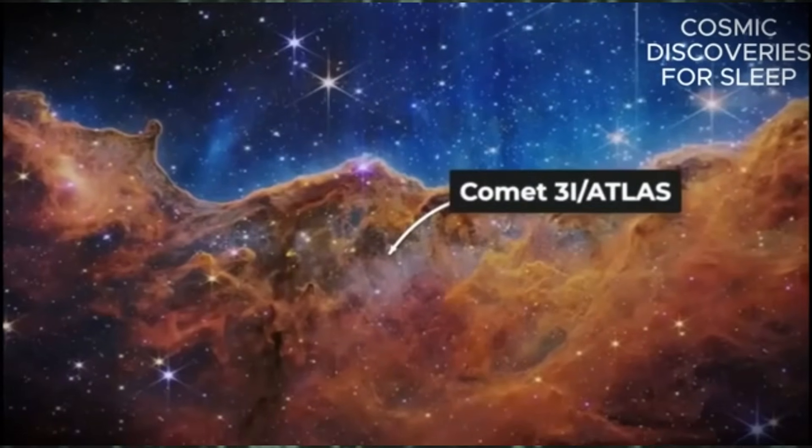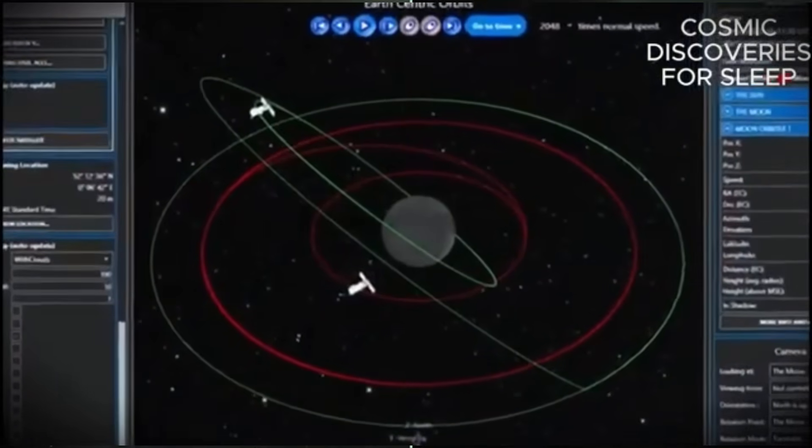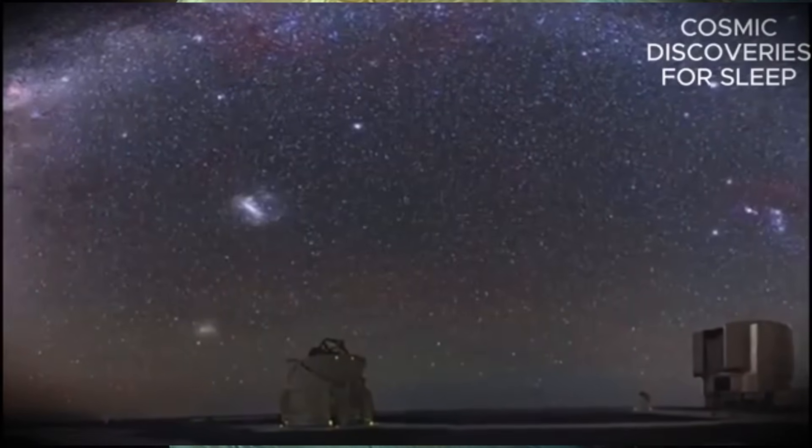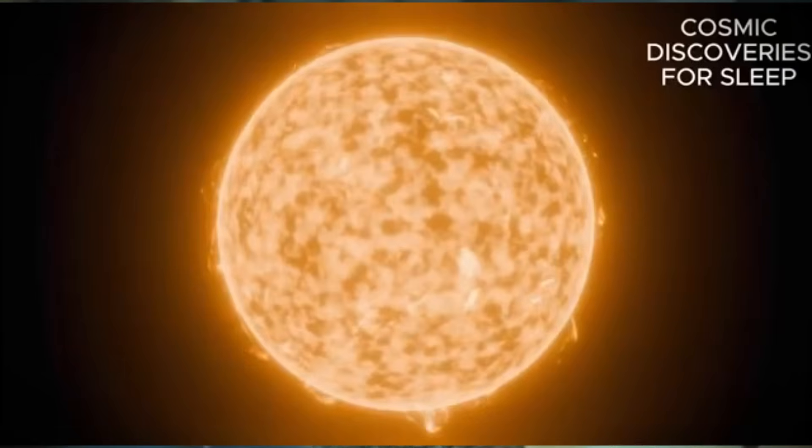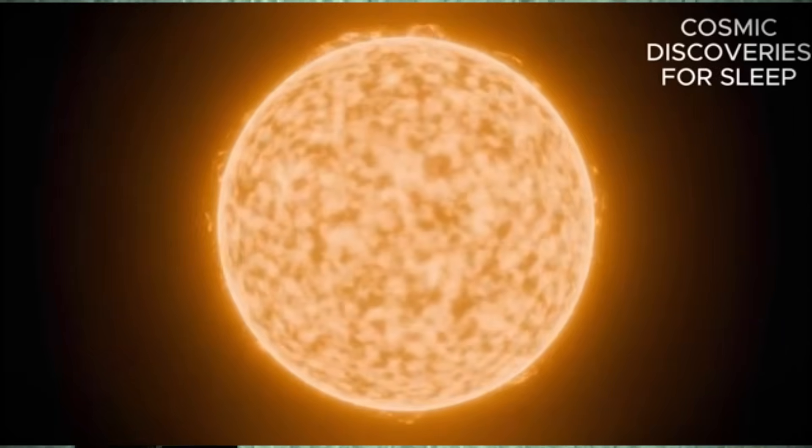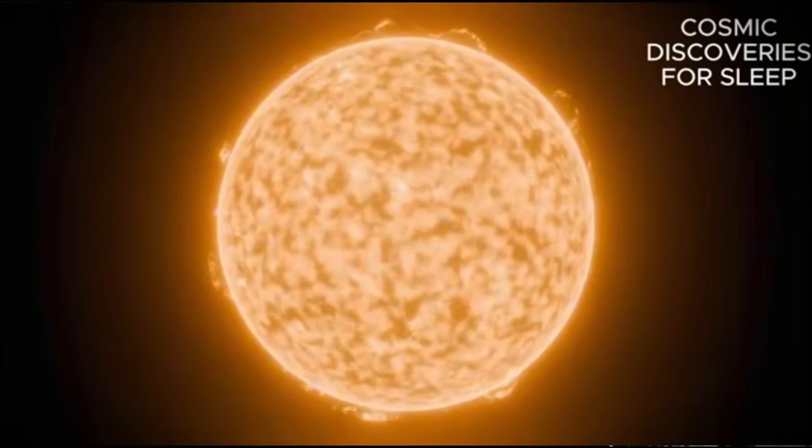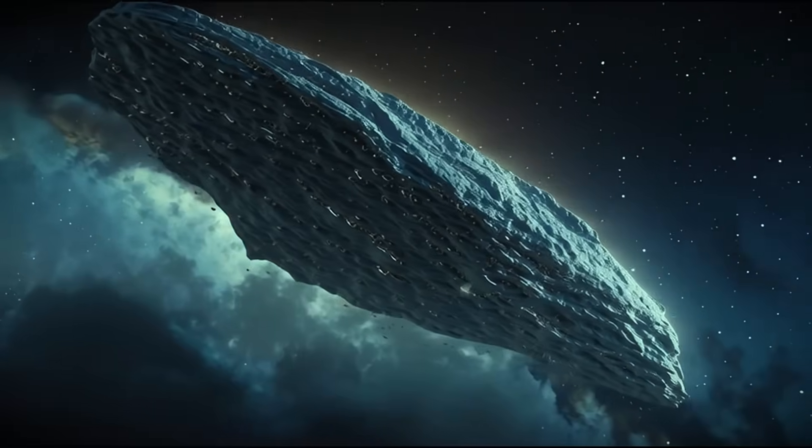Eighth anomaly: connection to the 1977 mystery. Atlas arrived from the same direction as the famous WOW signal of 1977, the most mysterious radio signal ever detected and which many consider the best evidence of extraterrestrial communication. The directional precision is impressive, like two events separated by almost 50 years pointing to the same cosmic address. The probability of this coincidence is very low.